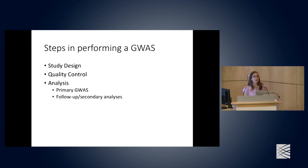There are three main steps in performing a genome-wide association study. First, you have to design your study appropriately to detect these effects. Second, you need to do appropriate quality control on your genotype and phenotype data. Third, after those are aligned, you perform your primary GWAS analysis, and then some secondary and follow-up analyses based on the GWAS results.